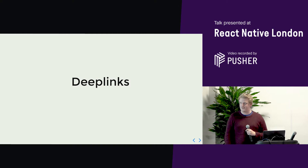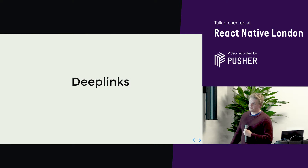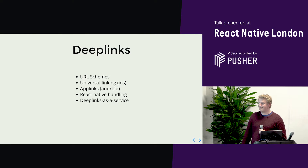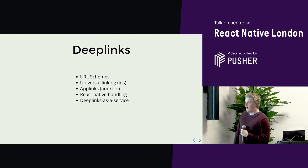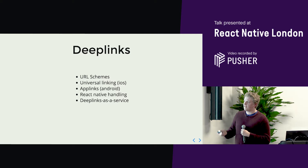For those of you who don't know about deep links, they are remarkably difficult to work with, so hopefully this clarifies things. Basically there are three different types: URL schemes, universal linking, and app links. I'm going to talk about those three first, then talk about how we deal with them in the React Native world — since all three are native land — and then talk about deep link services which alleviate the problems with the first three.